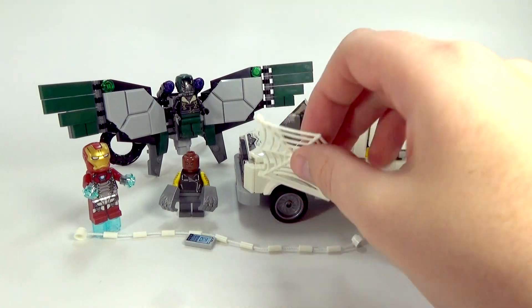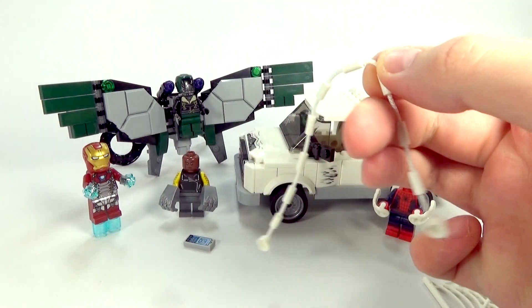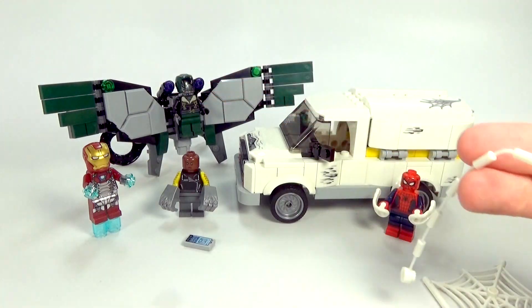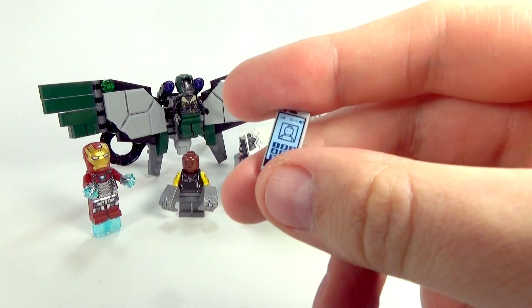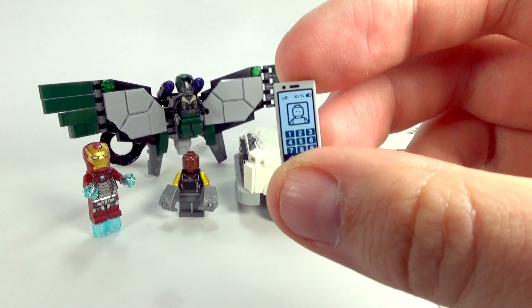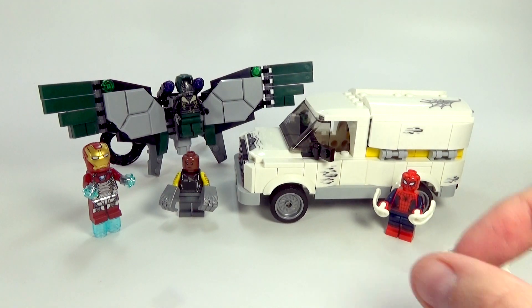We also get some accessories with Spider-Man. Of course, we get his web, and a web string here that you can hook and attach any way you want to on the set. And he does come with a phone for the Peter Parker aspect of it. So that's pretty cool. You can let Spider-Man have some accessories that are in the set.